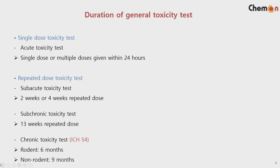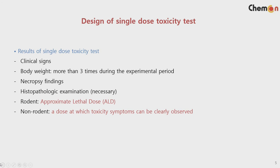ICH S4 deals with the duration of chronic toxicity testing in animals. For rodent, it specifies six months, and for non-rodent, after discussion between six and twelve months, the agreement is nine months. That is an important point in ICH S4. So the standard is six months for rodent — a 26-week repeated dose toxicity test — and nine months, or 36-week repeat dose toxicity testing, for non-rodent.